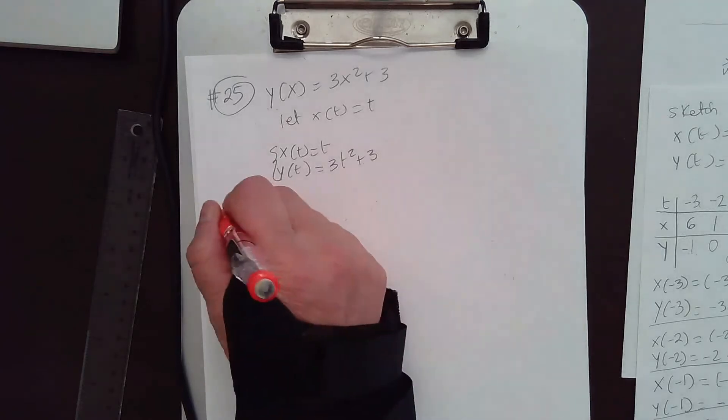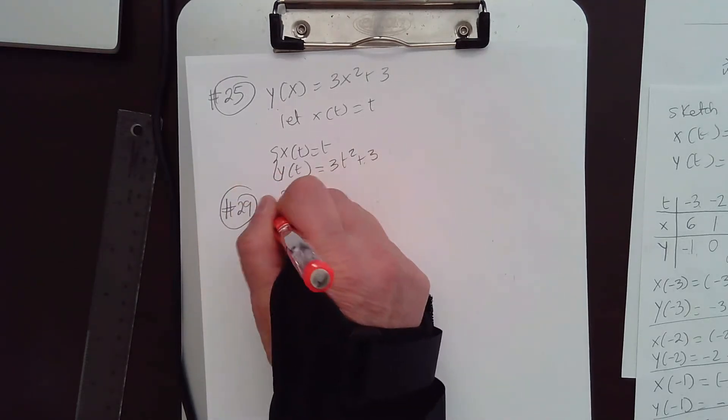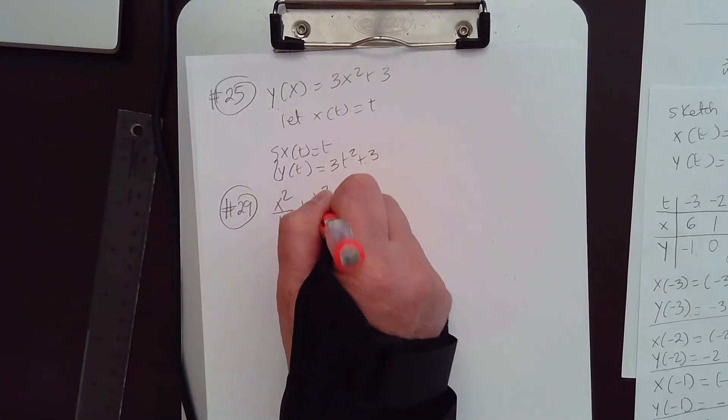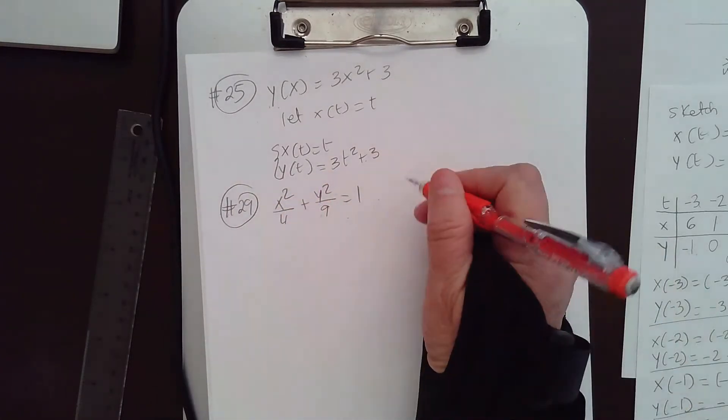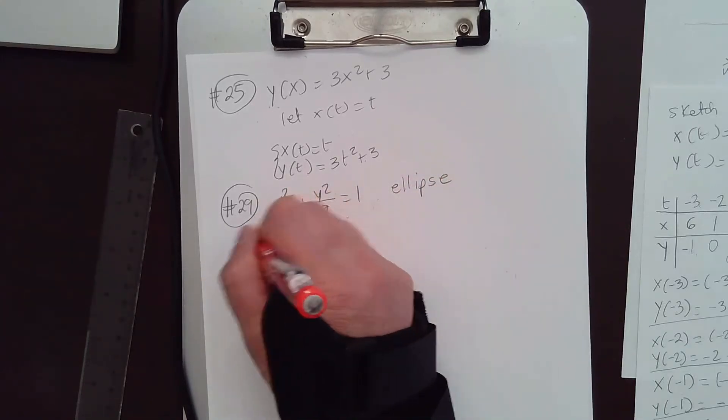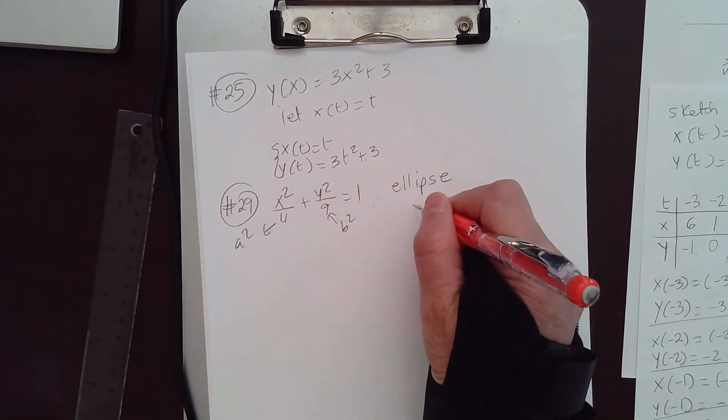Now, the same question if we do for number 29. Let's take a look. You have x squared over 4 plus y squared over 9 equal to 1. Notice that this is an ellipse, isn't it? We just had an example. This is a squared, and this is b squared.